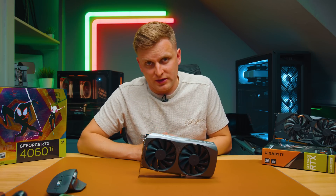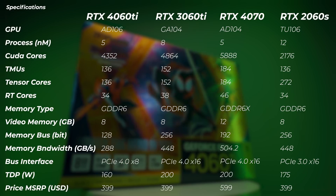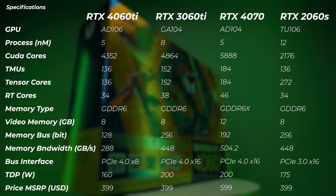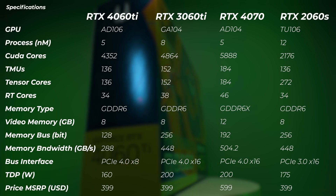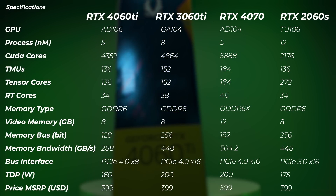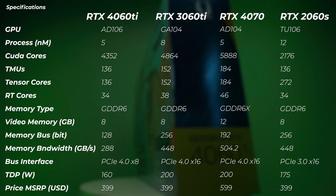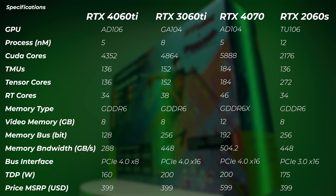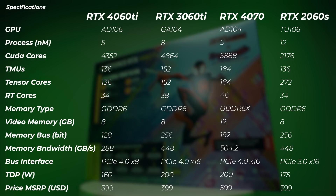Let's do the good news first, then talk about the bad news. The RTX 4060 Ti uses the AD106 GPU. I have four cards for comparison: the RTX 3060 Ti (the direct successor), the RTX 4070 (one step higher), and the RTX 2060 Super. If you're running a 2060 Super with the same MSRP and wondering about upgrading to the 4060 Ti, don't do that yet — just wait until the end of the video.